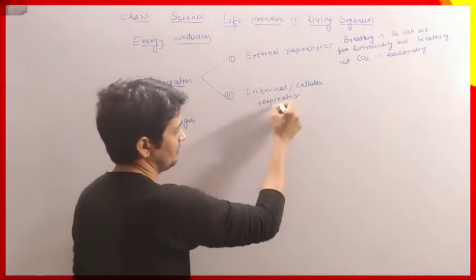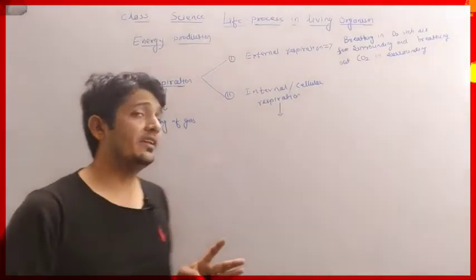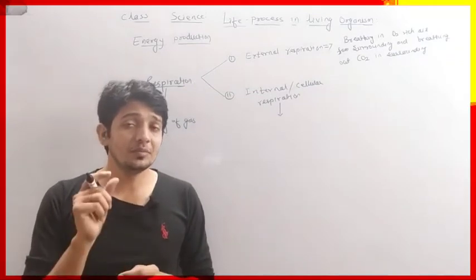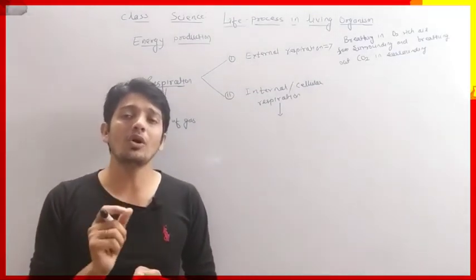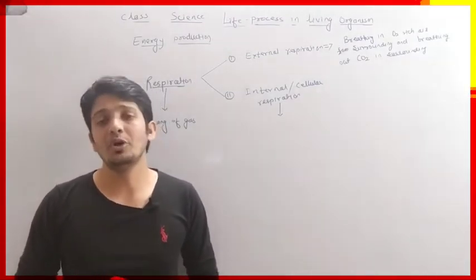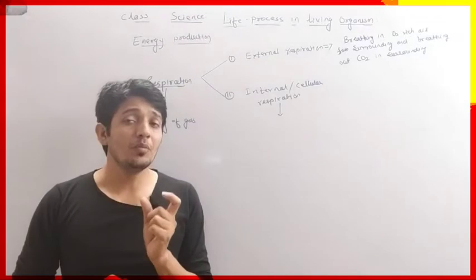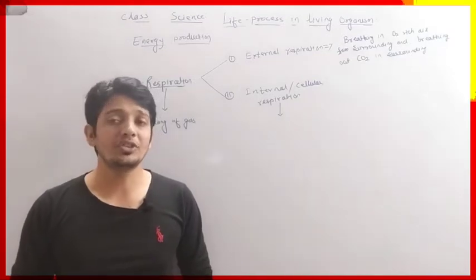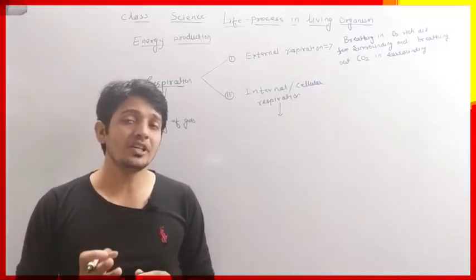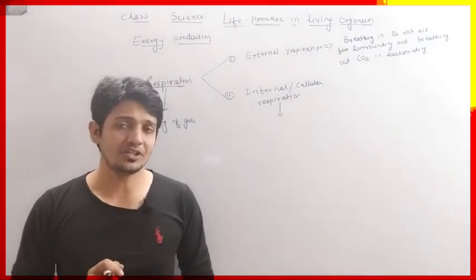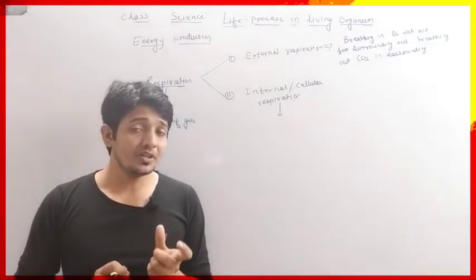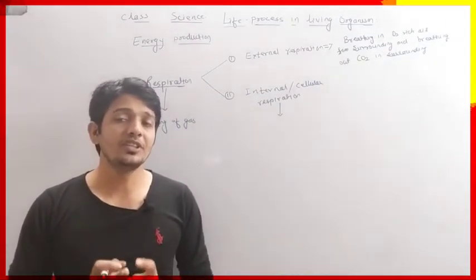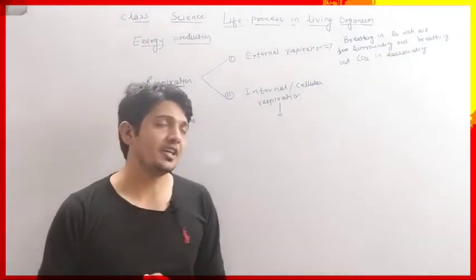When in the lungs the blood absorbs oxygen gas, this blood is circulated to all cells of the body where energy is produced. In blood, hemoglobin is present; hemoglobin combines with oxygen and converts into oxyhemoglobin. That oxyhemoglobin reaches all individual cells for energy production, where, in the presence of oxygen, complete oxidation of glucose takes place. This process is called internal or cellular respiration.